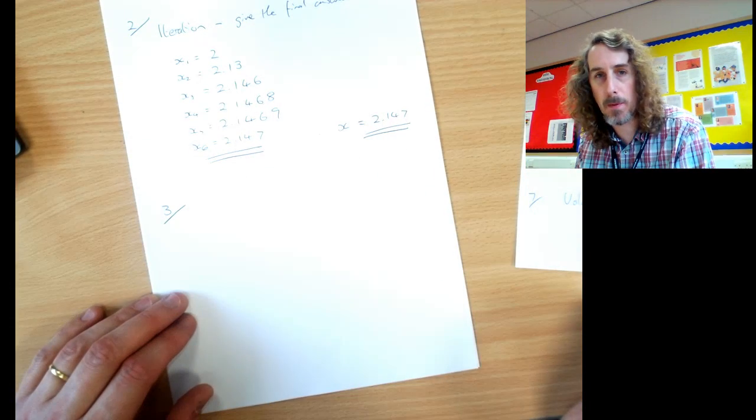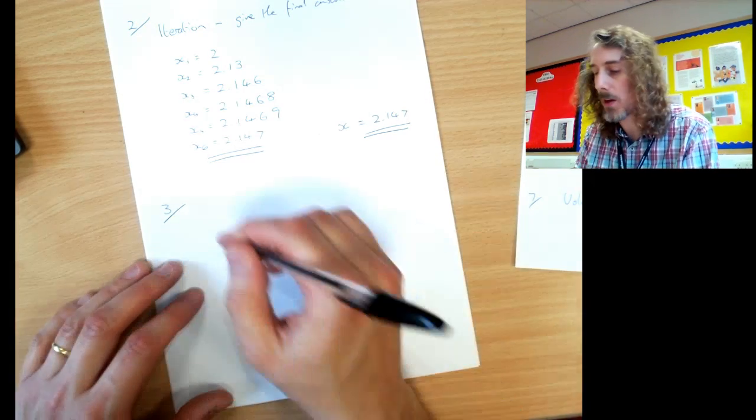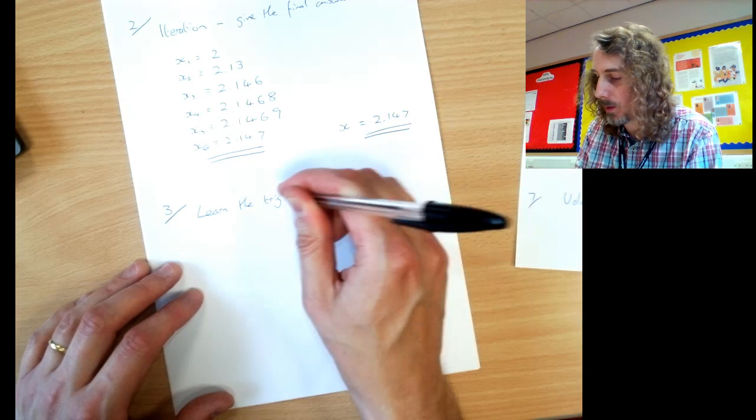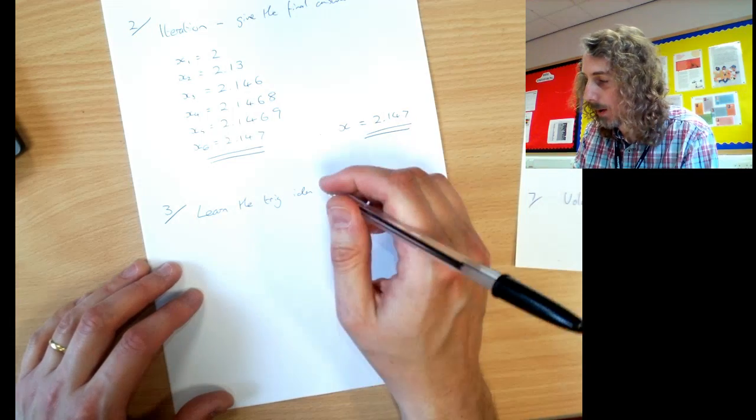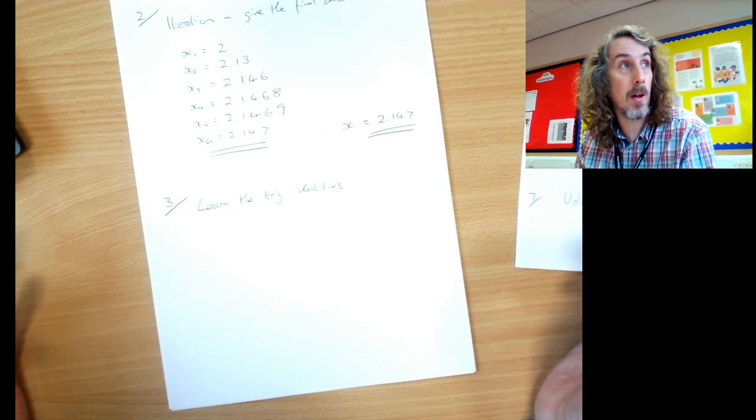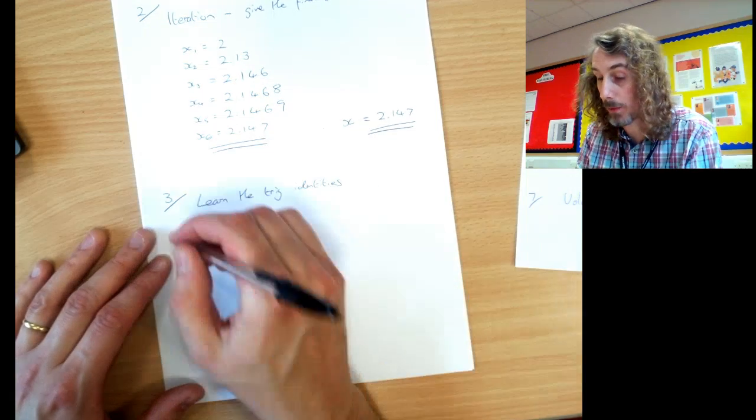Number three. Top tip number three is quite a simple one, really quick one. Learn the trig identities. No excuse for this one. Get them learnt. You know the trig identities. You've got the list of them. Work through that.